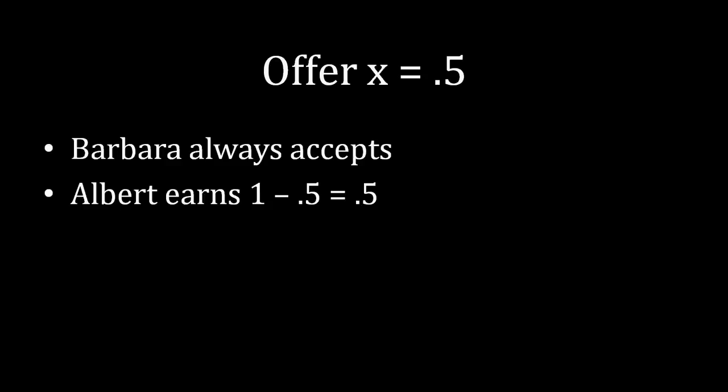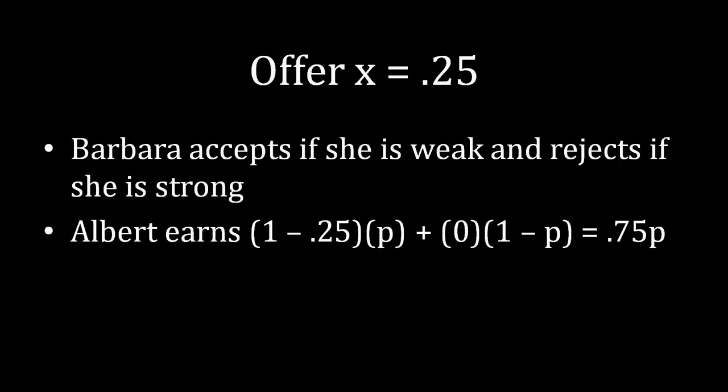What happens if Albert offers 0.25 instead? Barbara accepts if she's weak and rejects if she's strong — since the strong type's outside option of 0.5 exceeds 0.25. Now we need to calculate an expectation. P is the probability that Barbara is weak. When Barbara is weak and accepts, Albert receives the remainder: 1 − 0.25 = 0.75, which occurs with probability P. When Barbara is strong, she rejects and Albert receives a payoff of 0, which happens with probability 1 − P. The zero term cancels, so Albert's expected payoff for offering 0.25 is 0.75 × P.